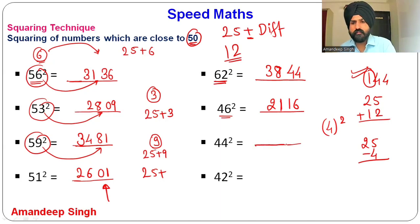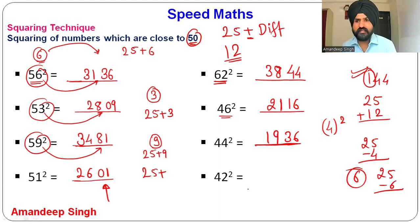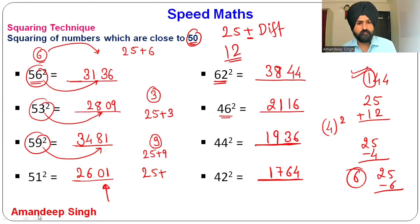For 44²: it is 6 less than 50. 6² = 36, write 36. Subtract: 25 − 6 = 19. So 44² = 1936. For 42²: it is 8 less than 50. 8² = 64, write 64. 25 − 8 = 17. So 42² = 1764. This is how you find squares of numbers close to 50.